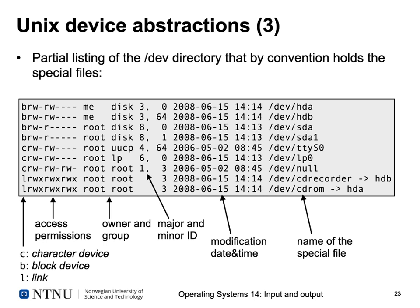/dev/null acts like a trash can — you can write everything into it and it is simply discarded, which is very useful when you want to get rid of output on your shell. In the listing, instead of a file size, we have two numbers separated by a comma: the major and minor device numbers. For example, /dev/hda and /dev/hdb share the same major device ID since they are connected to the same controller, but have different minor IDs — hda has minor 0, hdb minor 64.